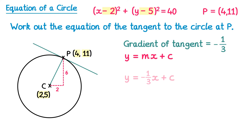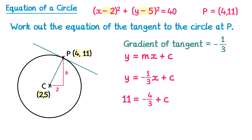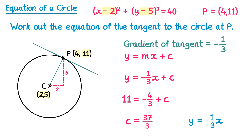We can now find the equation of the tangent using y equals mx plus c. The gradient is negative one third, and we substitute in the coordinates of point P: x is 4, y is 11. So 11 equals negative one third times 4 plus c. Negative one third times 4 is negative four thirds; adding four thirds to both sides gives c equals 11 plus four thirds. Changing 11 to 33 over 3 and adding gives 37 over 3. So the equation is y equals negative one third x plus 37 over 3.